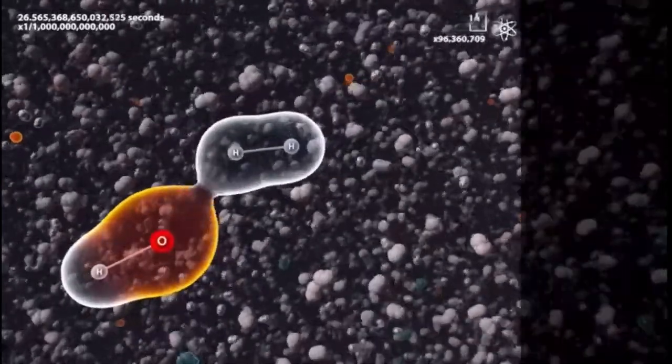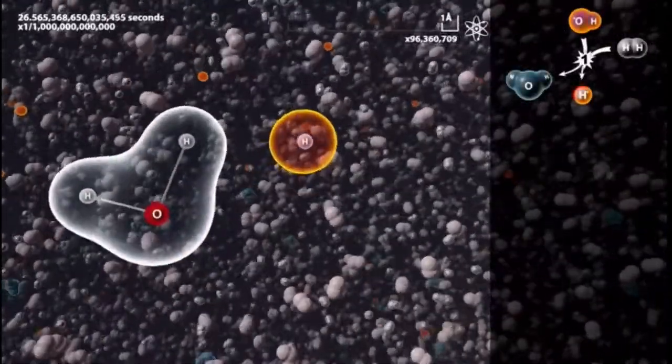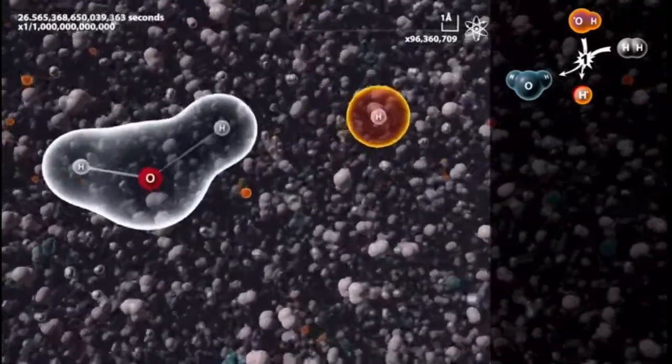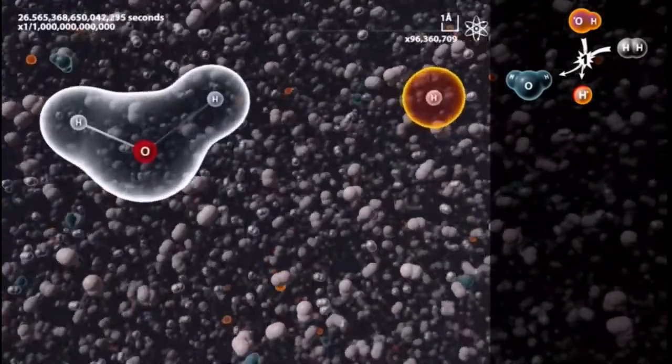The reaction begins when an active particle tears a separate atom apart from a hydrogen molecule. A single hydrogen atom has an unpaired electron. Thus, it is a radical.